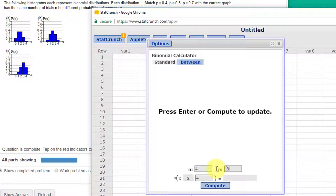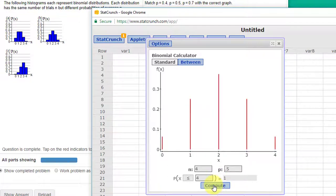So let's do the next one. P equals 0.5. Click Compute, and you can see it's symmetrical, and that kind of looks like B for beta.